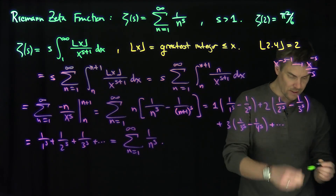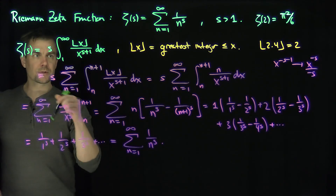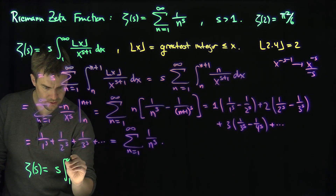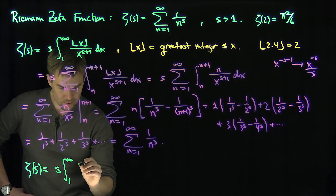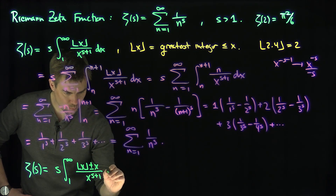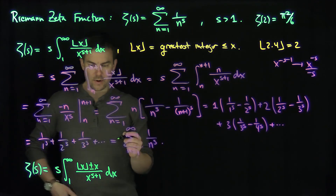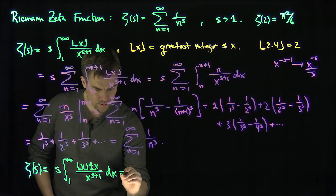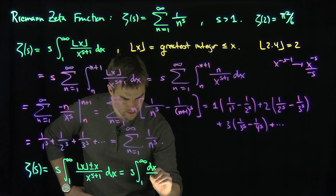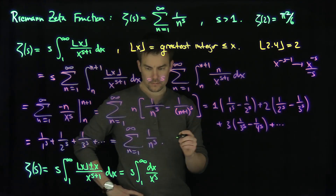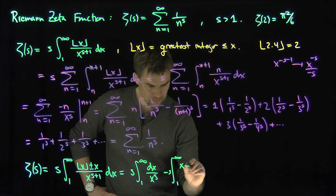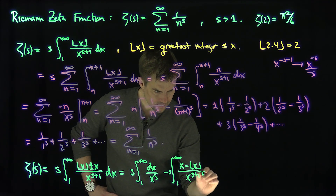A classic trick used to illustrate the singularity of the zeta function is to rewrite the floor of x as x plus (floor of x minus x), i.e., floor of x equals x minus the fractional part of x. So zeta of s equals s times the integral from 1 to infinity of x over x to the s plus 1 dx, minus s times the integral from 1 to infinity of x minus the floor of x — the fractional part of x — over x to the s plus 1 dx.